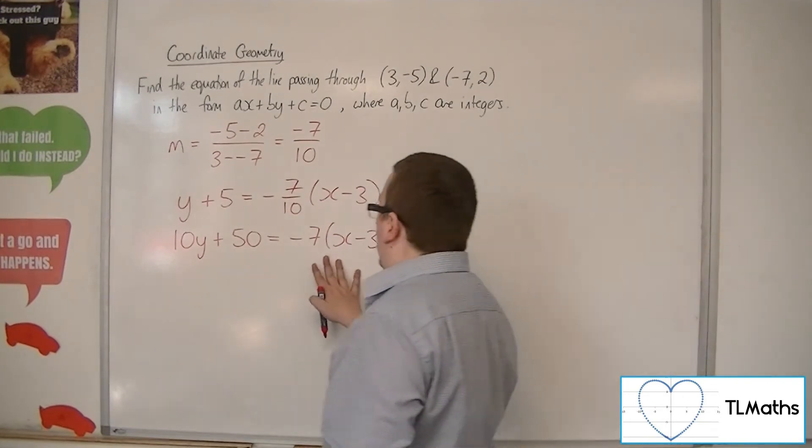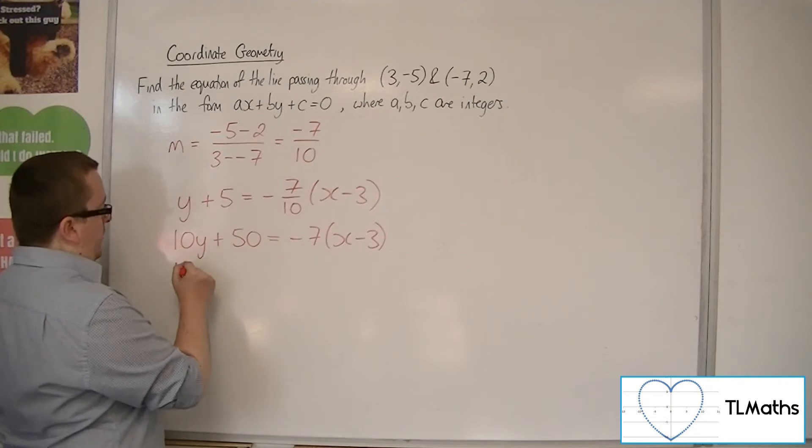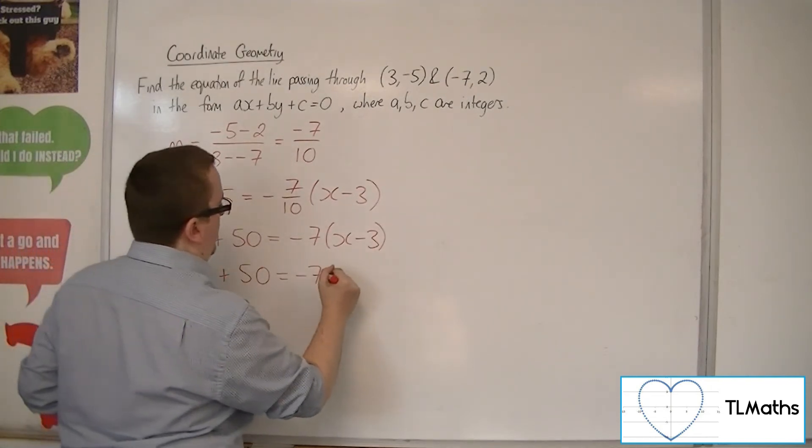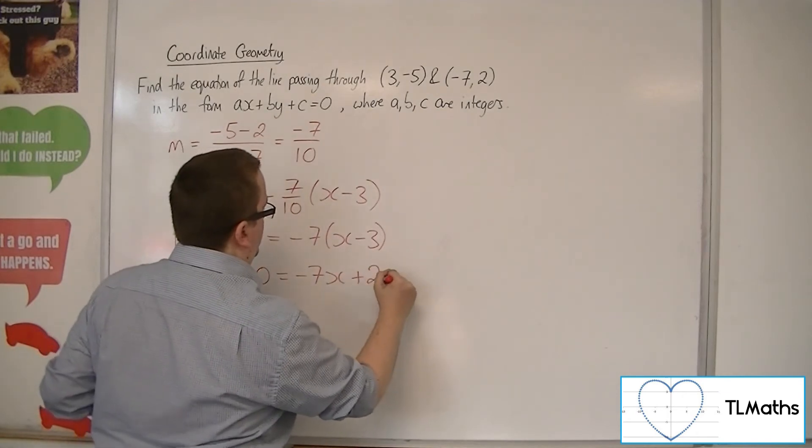So now I can multiply out that right-hand side. So 10y plus 50 is equal to -7x plus 21.